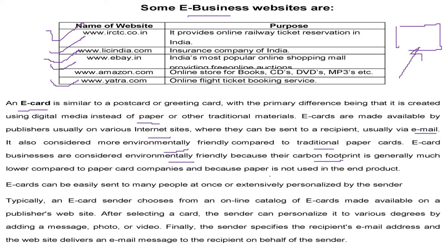You can send an e-card not just to one but to any number of recipients as you desire. The e-card sender chooses from an online catalog; various publisher websites provide ready-made e-cards or let you create one. After selecting a card, the sender can personalize it with a name, who it's going to, and messages — photos and videos can also be added. Finally, the sender specifies the recipient's email address and the website delivers the email on behalf of the sender.